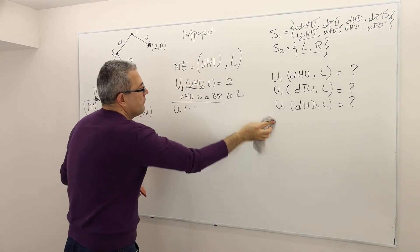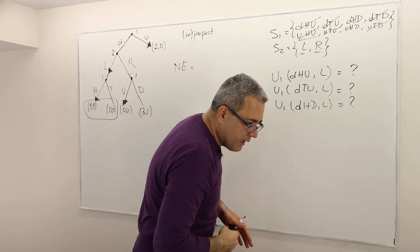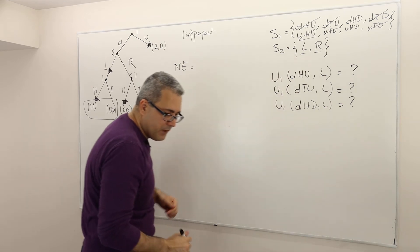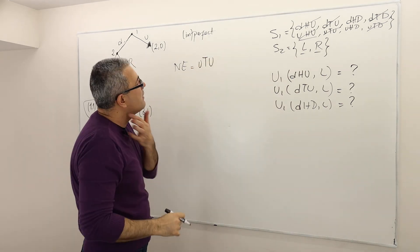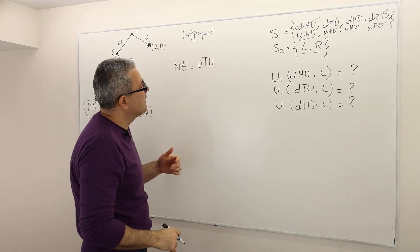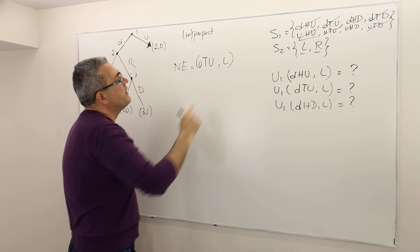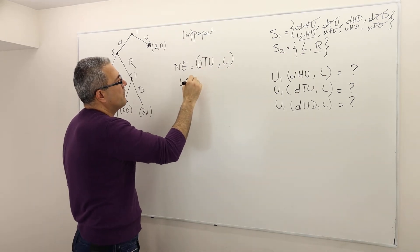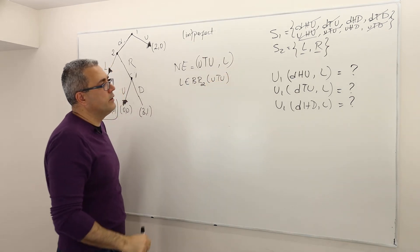All right. Well, let's check one more. And then I'll jump to another game. So let's check this one, UTU. Well, that one is exactly the same logic, right? I mean, UTUL. Once again, player two is best responding. L is the best response for player two, given that the first guy is playing UTU.